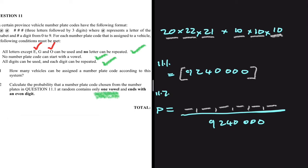We need only one vowel, and we know the number plate cannot start with a vowel, so that vowel cannot be in the first position — it can be elsewhere but not first. In the first position we still choose from 20 possible letters (23 minus the three allowed vowels). Let's say the vowel is in the second position — we choose from three vowels.